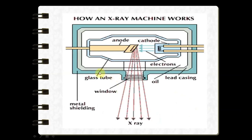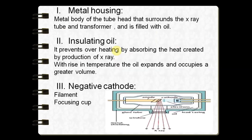In the tube head, there is a metal shielding or metal housing — you can see this blue outline, which is the metal shielding. Surrounding this metal shielding is an insulating oil placed within the x-ray tube head. Then we have the glass tube or glass envelope, which surrounds the cathode and the anode.